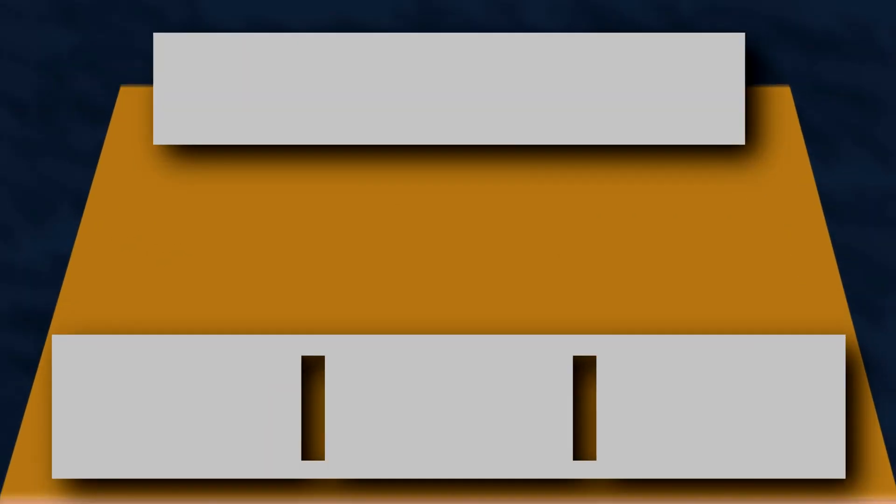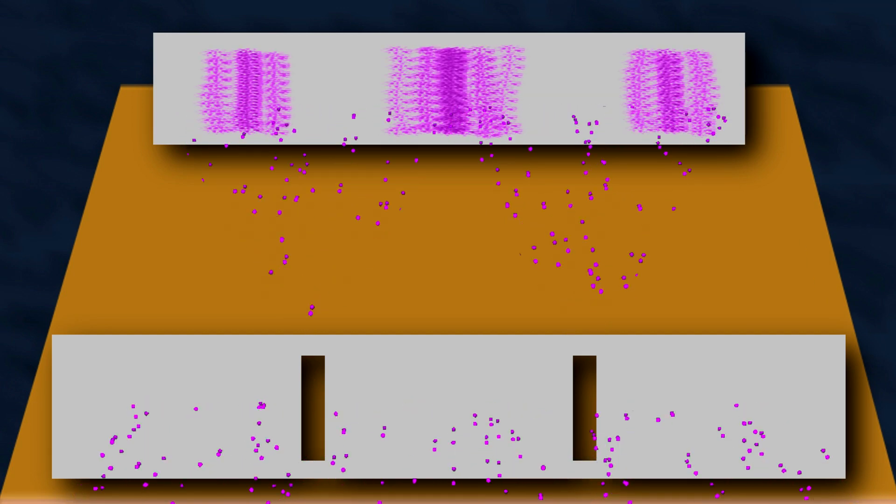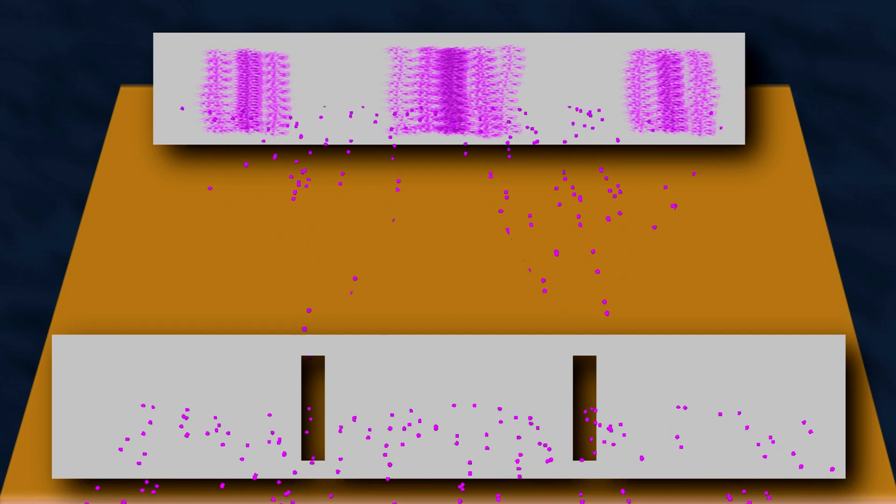Dude, get to the point! Okay, okay! This experiment has some weird results! First, we try sending a beam of electrons at the slits and we get this pattern at the detector. Voila! Electrons must be waves.